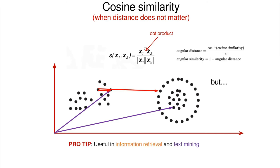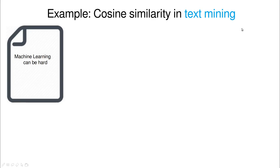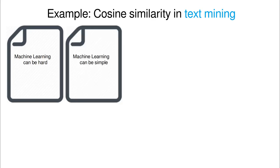But this is very useful in information retrieval and text mining. Why is that? Because what matters is the relative angle and not the absolute angle. Let me show you an example. Imagine that we want to compare a couple of documents, and imagine one document has something like this, machine learning can be hard, and the other document says machine learning can be simple. So these are pretty similar, actually. There is just one word of difference between the two of them.